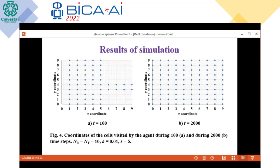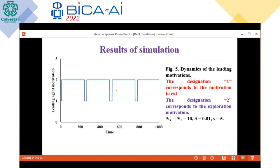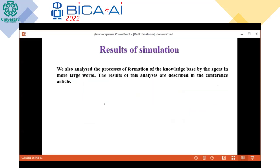Coordinates of cells visited by the agent during 100 time steps and 2000 time steps are shown in the figures, demonstrating that the whole world is investigated. The dynamic of the leading motivation is also shown: the agent spends most of the time investigating the world and a small portion of the time eating. We also analyzed the process of formation of the knowledge base by the agent in a larger world; the results of this analysis are described in the conference article.